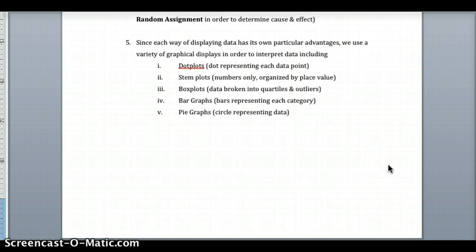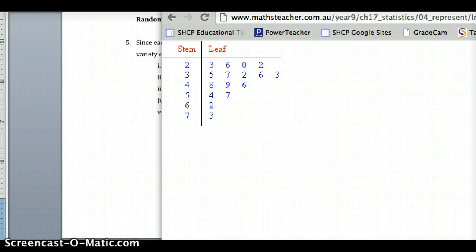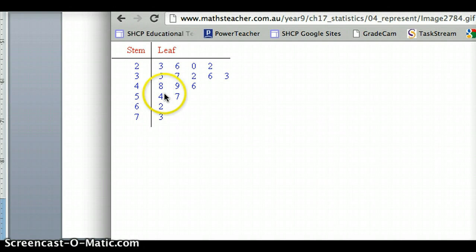We also display data using stem plots, where data is organized by place value. Groups with the same tens digit are together, with individual values to the right. In a stem plot, stems represent the tens place and leaves represent the ones place. For example, four values with two in the tens place would be 23, 26, 20, and 22. Values with three in the tens place would be 35, 37, 32, 36, and 33.